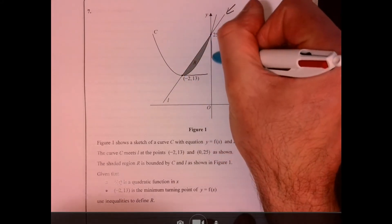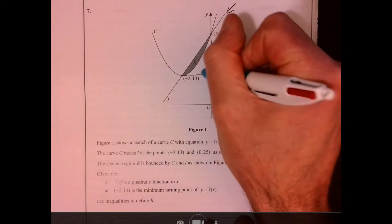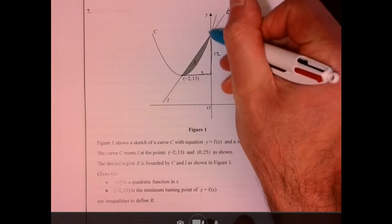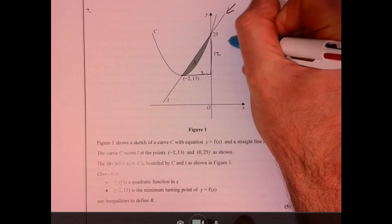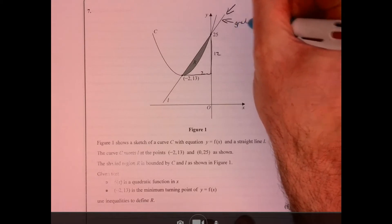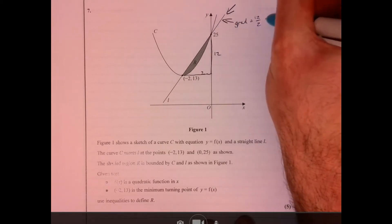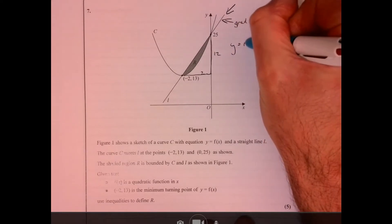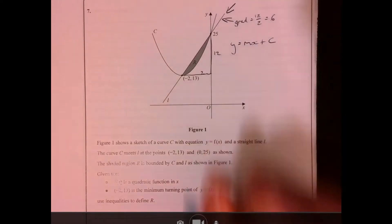Because it's linear and that's 2, that's 12. So 12 divided by 2, so the gradient of this must be equal to 6. It's going to be y equals, so I know it's going to be in the form mx plus c.